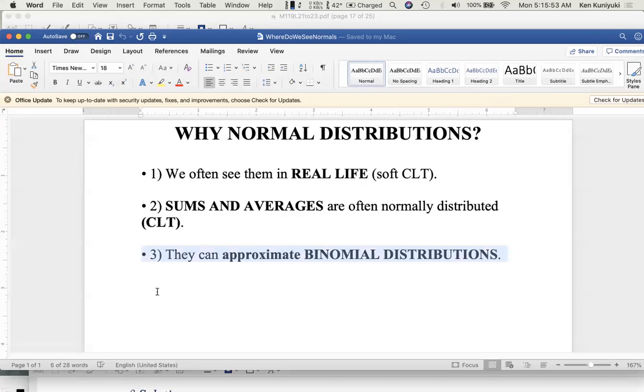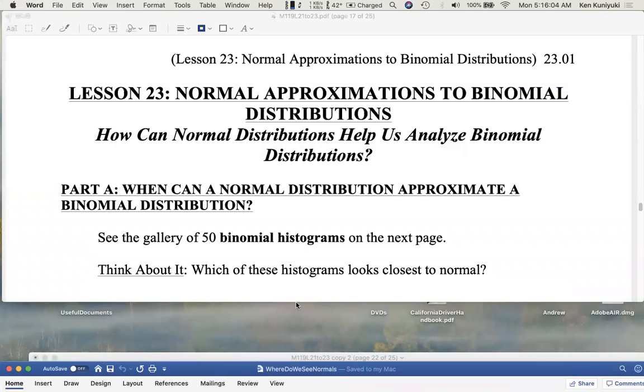A third application, which we're going to do now, normal distributions can be used to approximate binomial distributions, our old friends. And let's see how. In lesson 23, normal approximations to binomial distributions. How can normal distributions help us analyze binomial distributions so we can do things like approximate probabilities?